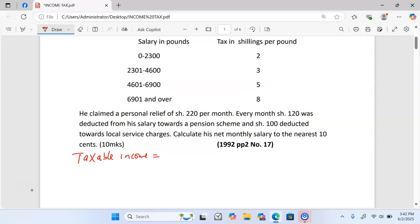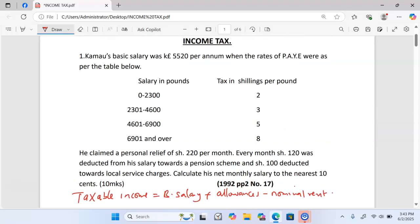Taxable income is given by the basic salary plus all taxable allowances minus nominal rent. Nominal rent is for people who are given free housing by the employer. In this case, we have been given the basic salary and no other allowances.